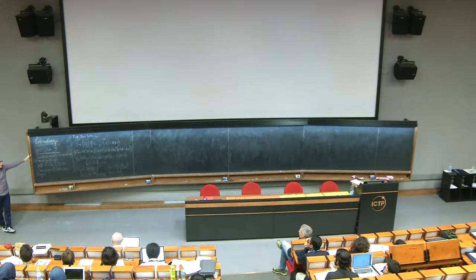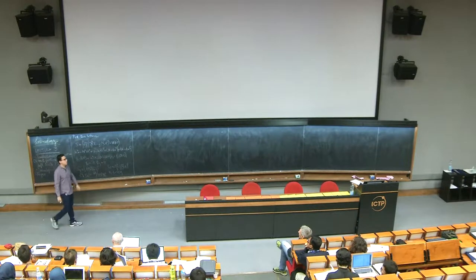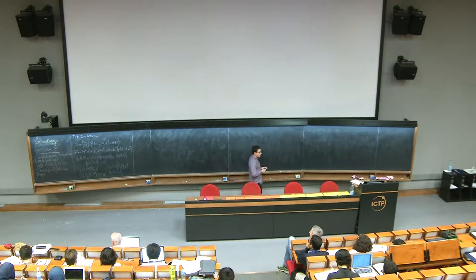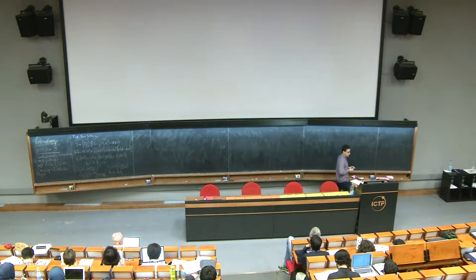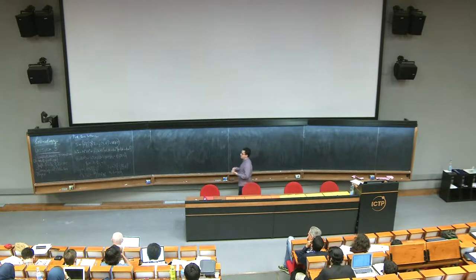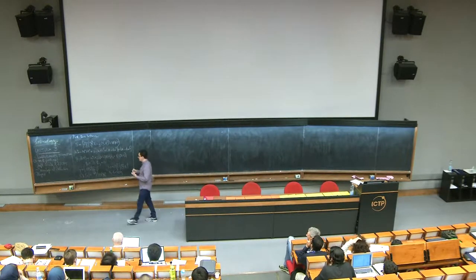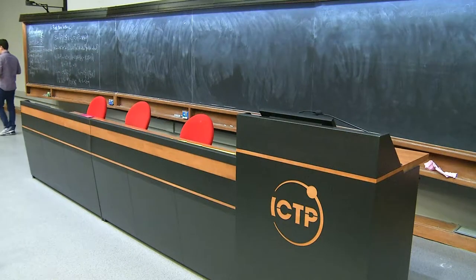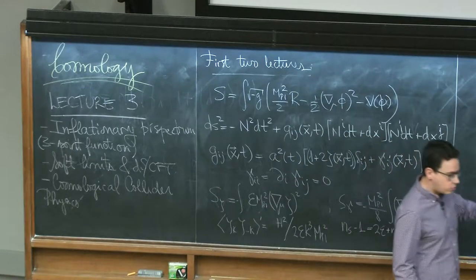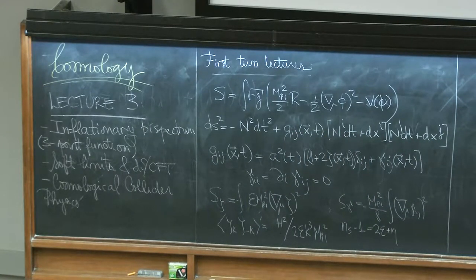Quantum field theory in a fixed background. The two main new features of a curved background are the ambiguity of vacuum choice and the phenomenon of spontaneous particle production from the background. This is the mechanism by which inflation, in inflationary backgrounds, produces the fluctuations we see in the CMB and hope to see even more of. The last two lectures will be about things we haven't measured but hope to measure, which will hopefully give us much more information about the nature of inflation.